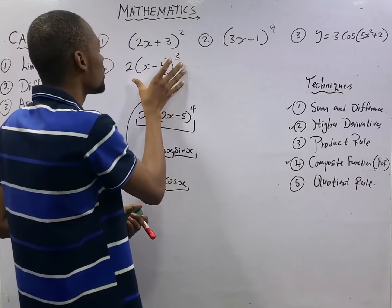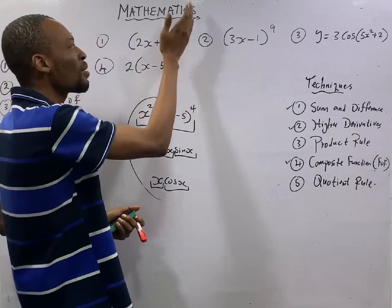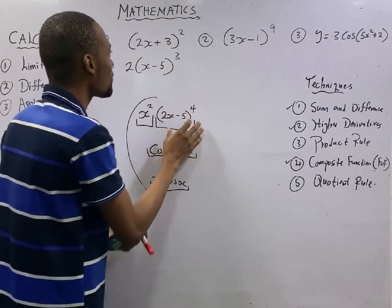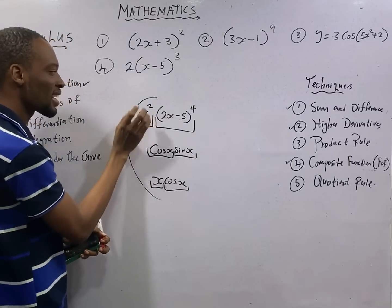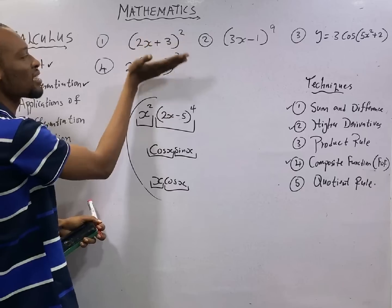Anytime you see functions like this, that are the same function, they carry power. But despite carrying power, they don't have any other function outside that can stand on their own. All these ones are referred to as composite function.